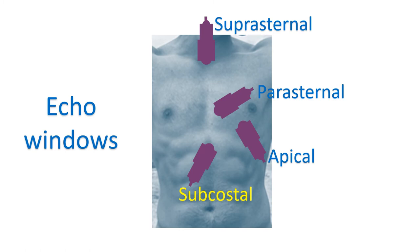Common sites are the front of the chest near the breast bone, at the place where you feel the heartbeats, the uppermost part of the tummy, and in the neck just above the breast bone. These echo windows are called left parasternal, apical, subcostal, and suprasternal respectively. Left parasternal means on the left side of the breast bone. Apical means at the apex of the heart where heartbeats are felt. Subcostal means just below the rib cage in the upper end of the tummy. Suprasternal means above the breast bone.